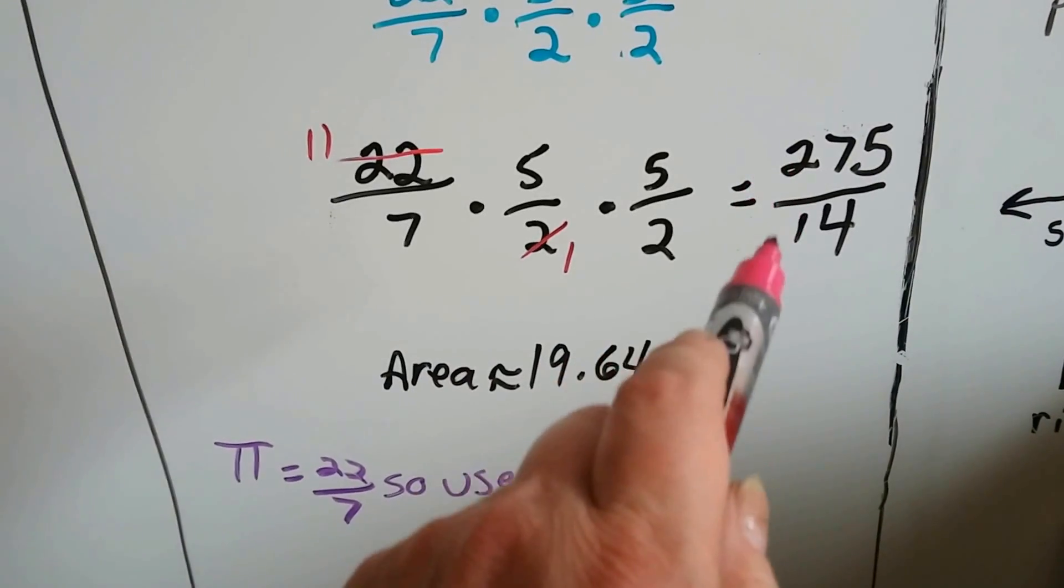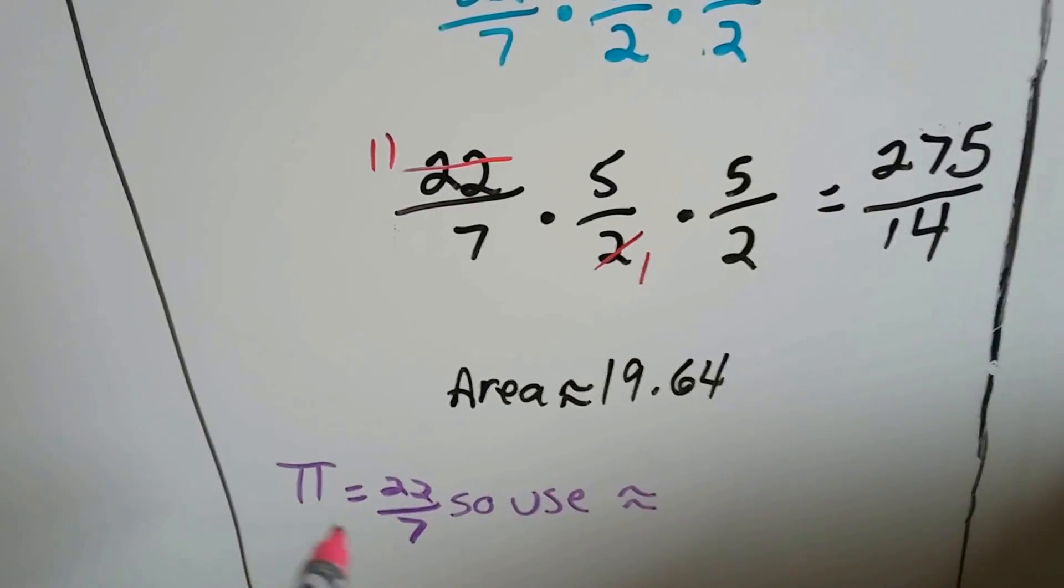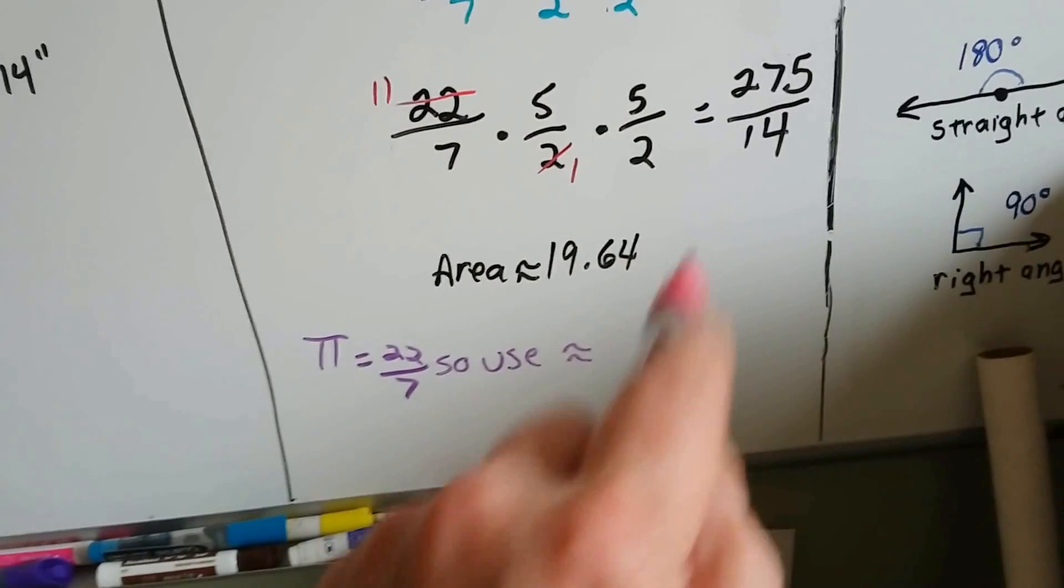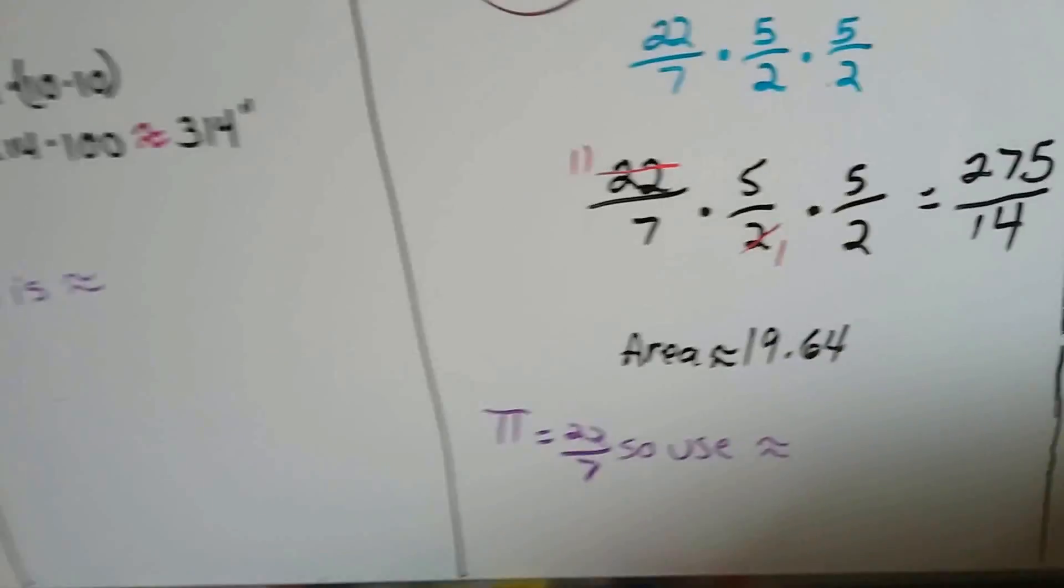So we get 275 over 14. When you divide 275 by 14, we get approximately 19.64. And again, because we're dealing with pi and 22 over 7, we use the approximate sign. So the area is approximately 19.64.